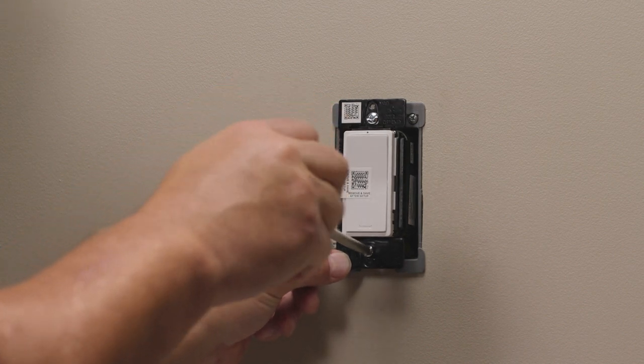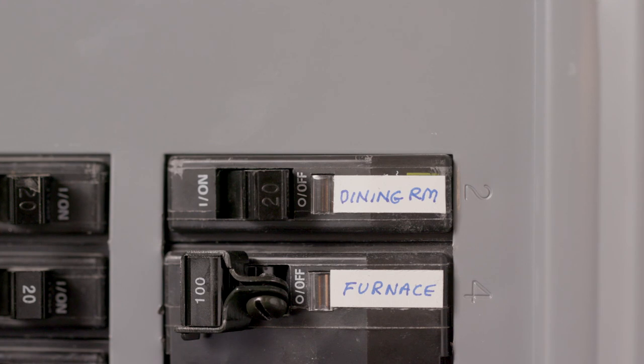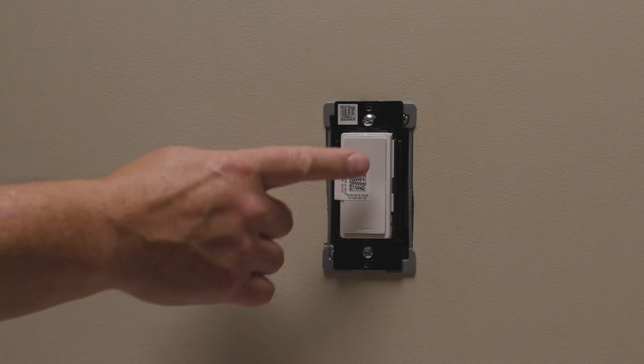Be sure you don't over-tighten the screws or your device will not sit flush to the wall. Now you're ready to test the smart switch. Turn the power back on at the circuit breaker and press the paddle switch to turn your light on and off.